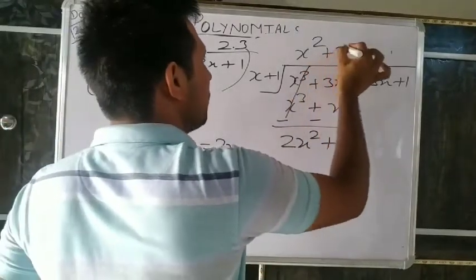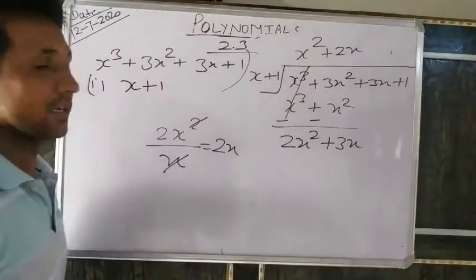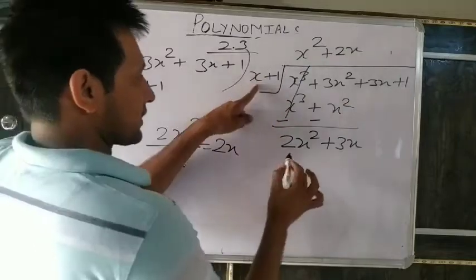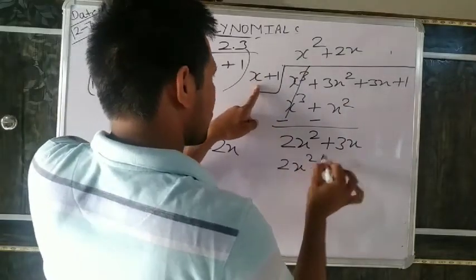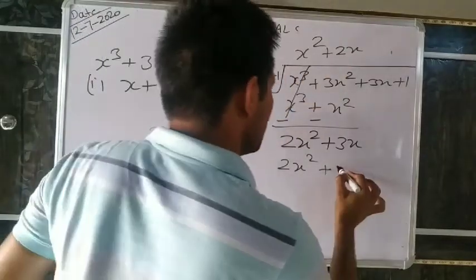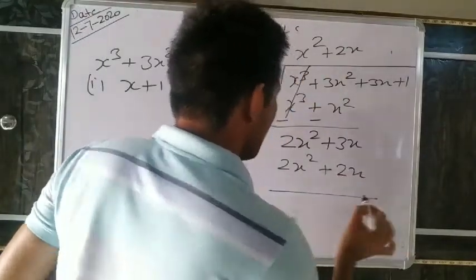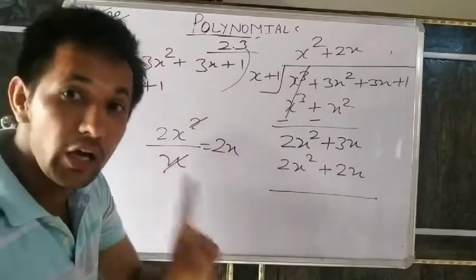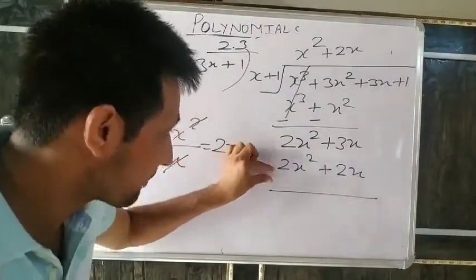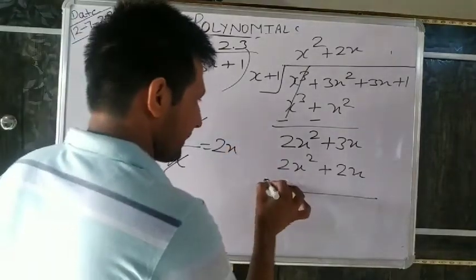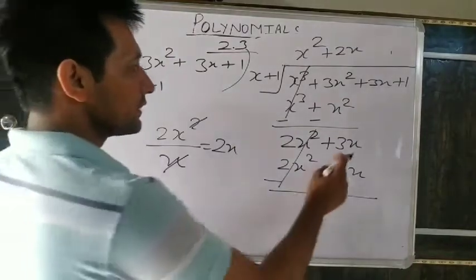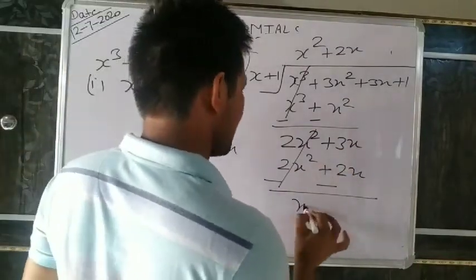2x² minus 2x² equals zero. Now 3x minus 2x remains, which equals x. Bring down the next term +1. So we have x+1 remaining. Now write a number in the quotient — when multiplied by x it gives x. x divided by x is 1. Write plus 1.